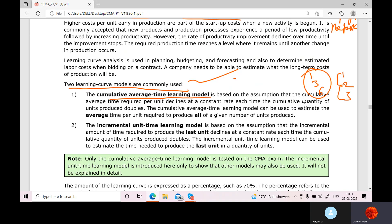Cumulative average time model is based on assumption that cumulative average time required per unit declines at a constant rate each time the cumulative quantity of units produced doubles. They say that as you start your production, you double your production only when you become experienced. The cumulative average time, the time would reduce constantly if you double your production. Because as you start producing more and more, since your experience is increasing in some task, you consume less time.